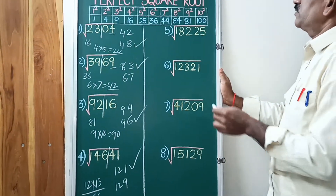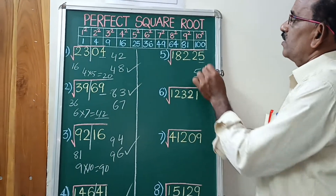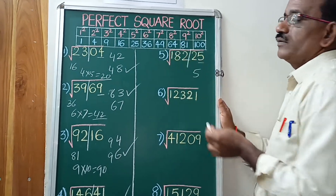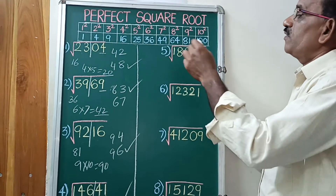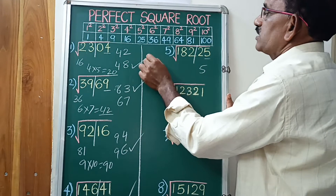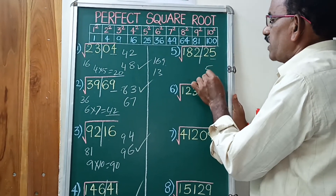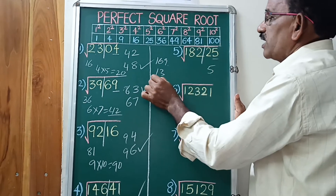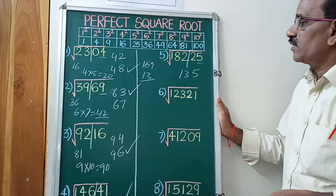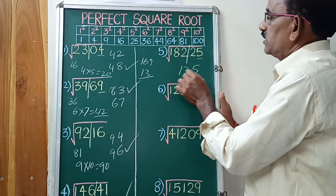Next: the last digit is 5. Take 1 and 2 slash — before the slash is 182, and the nearest square number is 169 (which is 13 squared). Since the last digit is 5, the square root of 18225 equals 135.